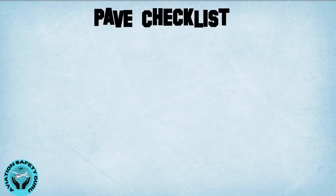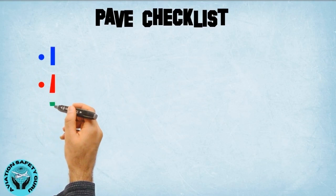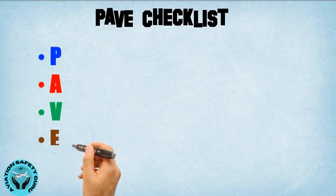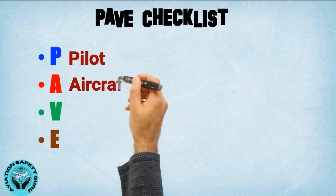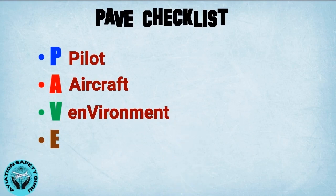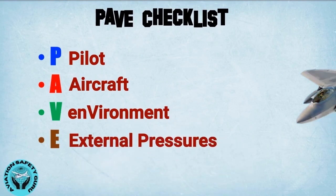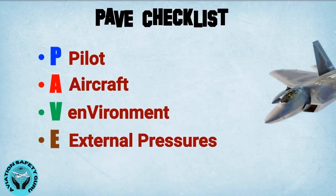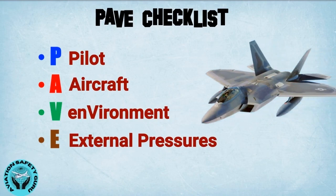PAVE checklist. It provides a means to identify hazards, focusing on pilot, aircraft, environment, and external pressures. Using this checklist before flight, pilots can capture most of the hazards.